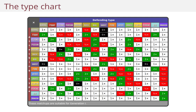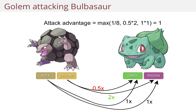So let's look at this on a particular set of Pokemon. What if Golem meets Bulbasaur in battle and Golem is attacking Bulbasaur? We're going to do a simplification here — we are going to deviate a little bit from the real world as presented by the games and simplify by saying that a Pokemon only has access to moves of the same type as its own type. So Golem here is of type rock and ground, and we're going to assume that he only has access to rock and ground type moves.